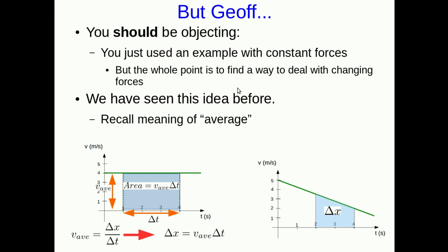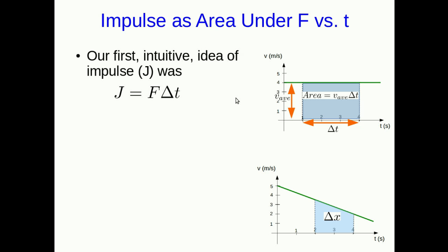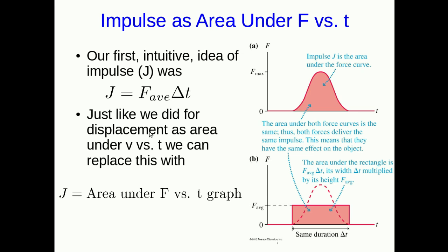So we're now going to use that same idea, but we're going to use it with forces which are causing changes in velocity instead of velocities that are causing changes in position. Our first intuitive idea based on the idea that changing the force was equivalent to changing the amount of time during which you apply the force was that the impulse, which is the total effect of the force, is the force times the time. Or a little more precisely, since this was really based on the average acceleration, this should really be the average force here.